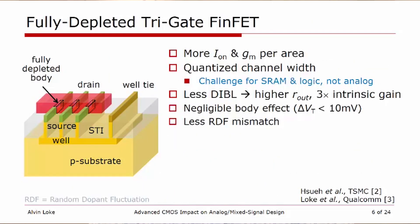This takes us to the fully depleted tri-gate FinFET. The obvious benefit is you get more on-current and more GM per unit projected area onto the wafer die, because we're amplifying the effective width of a transistor into the third dimension — normal to the wafer — without increasing area. The fin dimensions are fixed in height and width, so the effective width per fin is quantized. This is a challenge for SRAM, but less so for analog, since transistor GMs are generally very small per fin given the low overdrive used under constrained supply voltage. Additionally, there is less doping in these transistors, resulting in higher R_out and higher intrinsic gain. The body effect is almost negligible, and random doping fluctuation mismatch is actually improved, leading to reduced transistor mismatch.